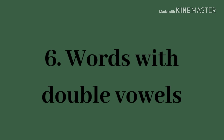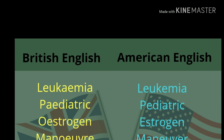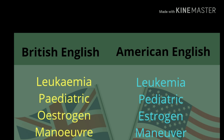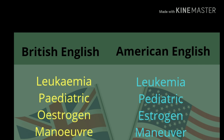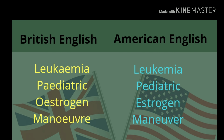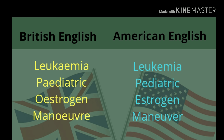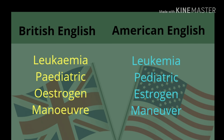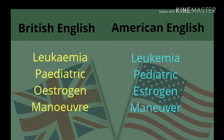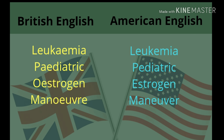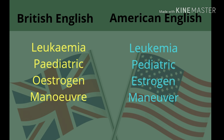Now we'll discuss words with double vowels. In British English we use double vowels, while in American English a single vowel is used. Examples include: leukaemia, paediatric, oestrogen, and manoeuvre. In American English, 'oestrogen' becomes 'estrogen'. As you can observe in 'leukaemia', British English uses two vowels A-E, while American English uses a single vowel E.